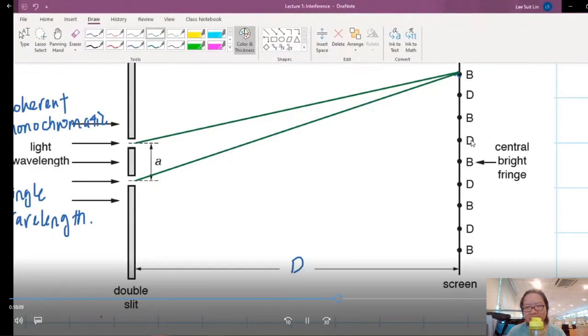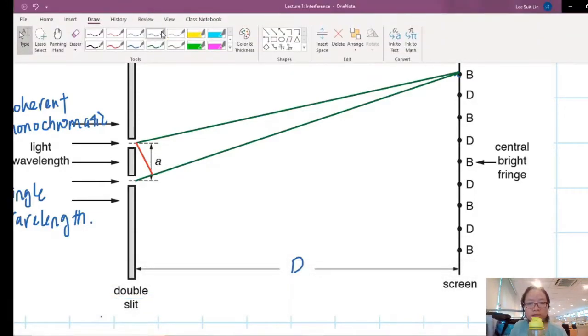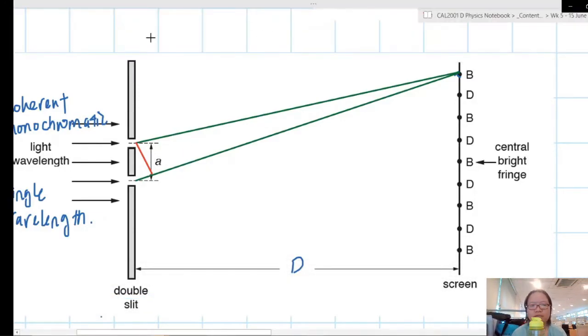And I am now going to draw a few things, just to get our bearings right. There's a wave coming out from this slit, there's a wave coming out from the other slit, and let's say they are to meet at point B. This point here. I already labelled the dark, bright, dark, B for bright, D for dark along the screen already.